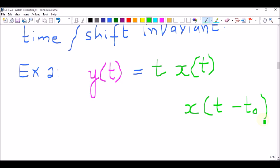From the definition of the system, we know that if we shift the input, the scaling factor remains to be that particular time t. Our modified output on shifting the input alone is y prime t, which is equal to t times x(t - t0).